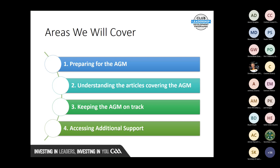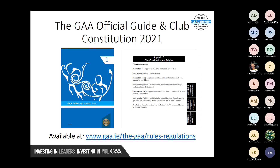No better place to start than the GA Official Guide and the Club Constitution 2021. These are available on the GA website — the URL is there and you'll get it when Aaron sends out the pack later. When you're involved in administration in the GA, you should familiarise yourself with these documents. In particular, clubs should familiarise themselves with the club constitution. In reality, it's only roughly about 20 pages at the end of the official guide, but it will mean you'll run a more effective club if you're familiar with its contents.